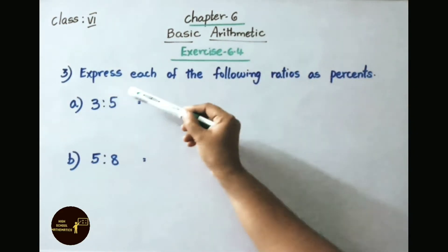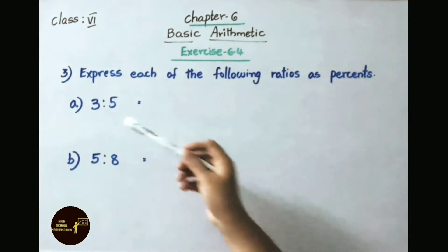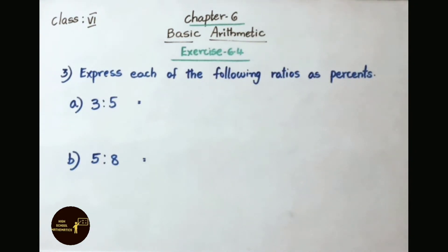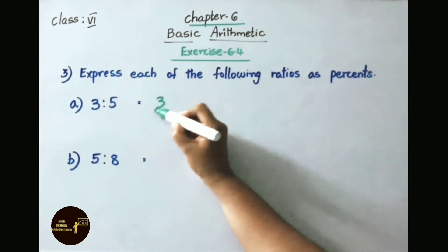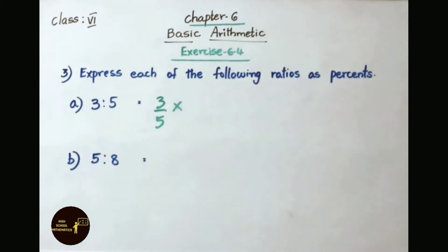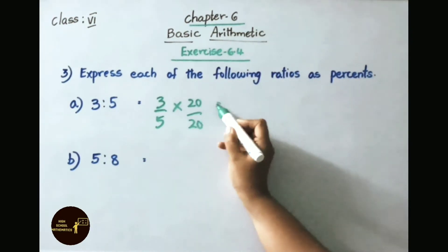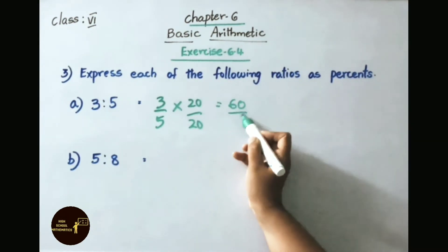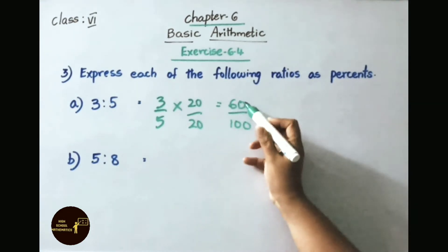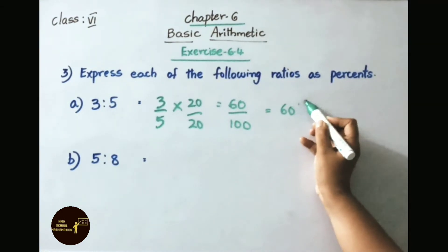Question 3: express each of the following ratios as percents. Question A: 3 is to 5. This can be written as 3 by 5. To make the denominator 100, multiply numerator and denominator by 20. 3 into 20 is 60, and 5 into 20 is 100. So 60 by 100 can be written as 60 percent.